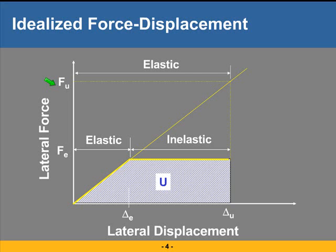If we decide we cannot afford that highest strength level and all we can afford is a much lower strength level F sub E, then what would happen if the same earthquake were to hit our structure is that when the earthquake-induced forces equal and then exceed the supplied strength level, the structure will start cracking and yielding in places. That will be the end of elastic displacements, and any subsequent displacement will be inelastic, with damage associated with it.